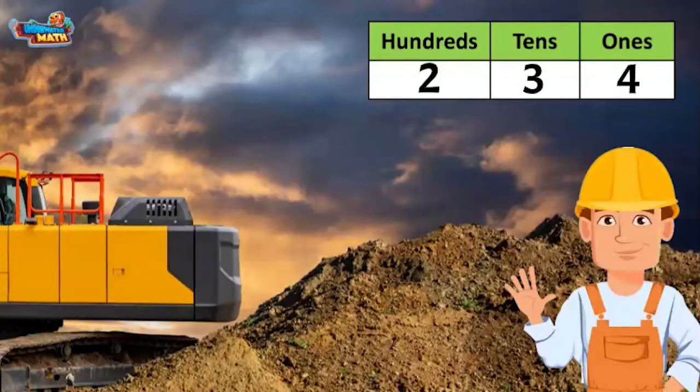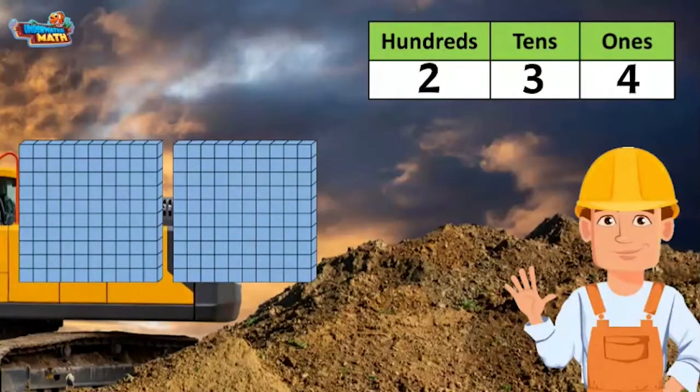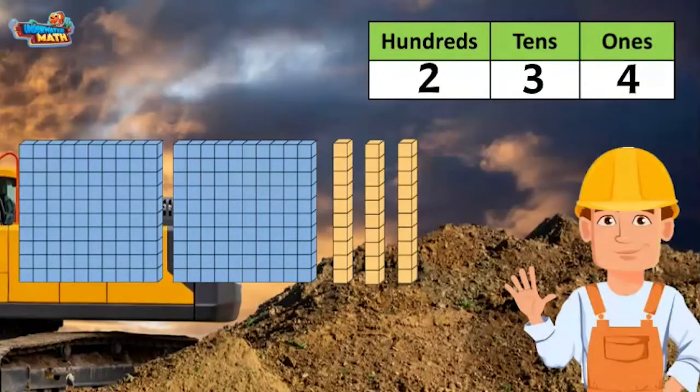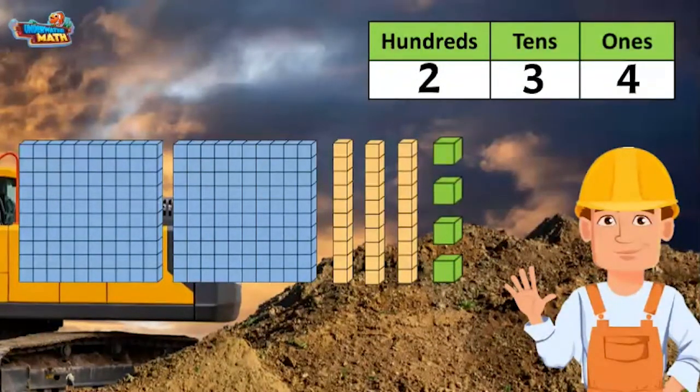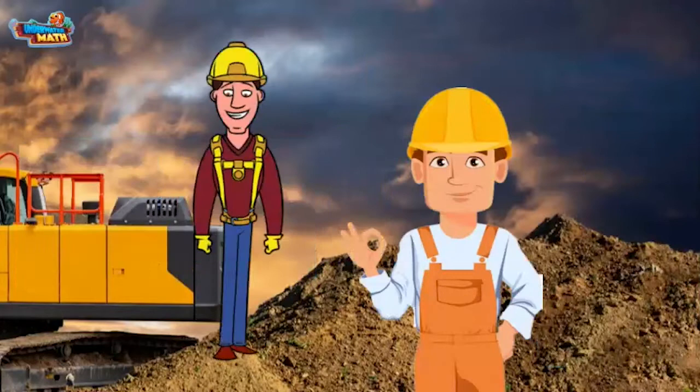Here's a handy chart I use to help me with place value if I get stuck. The digit 2 is in the hundreds place, that means we need two flats. The digit 3 is in the tens place, three longs coming right up. 4 is in the ones place, so I need four cubes. Larry, all set!